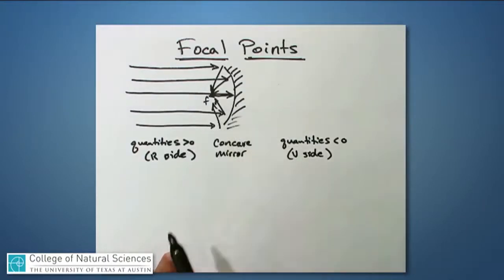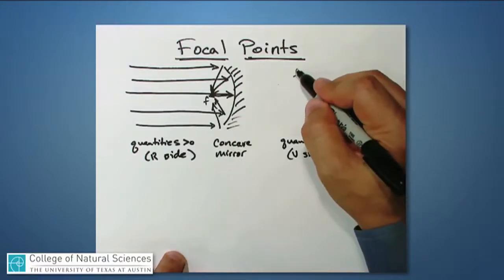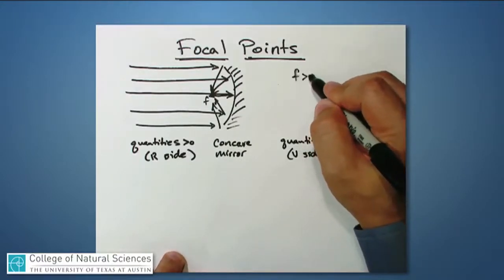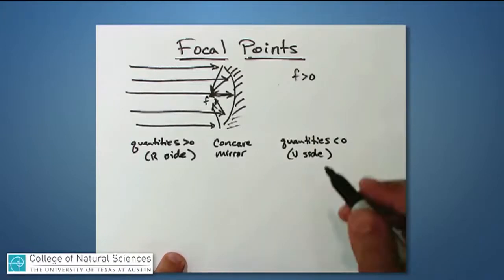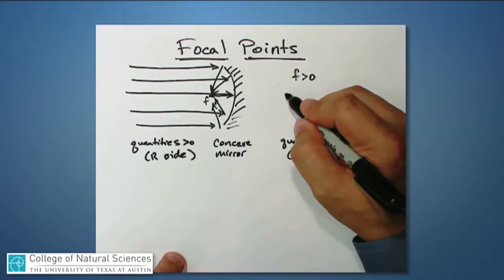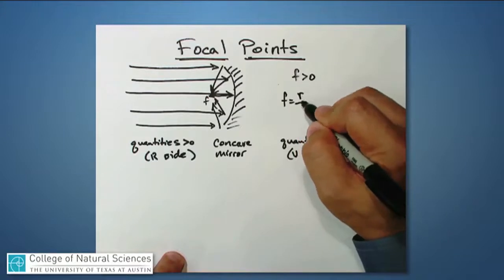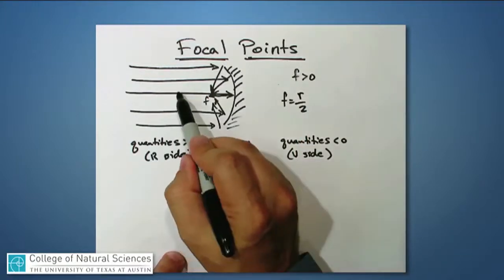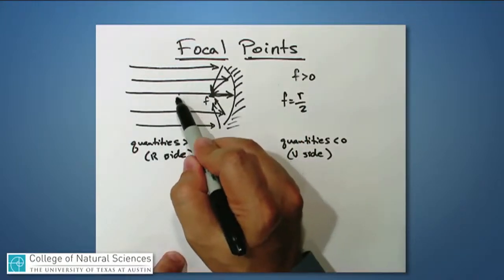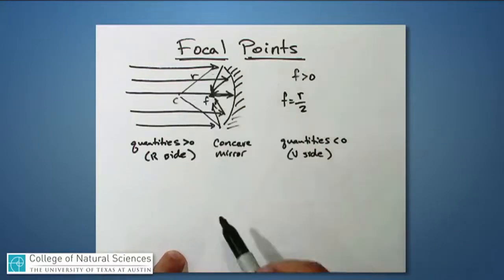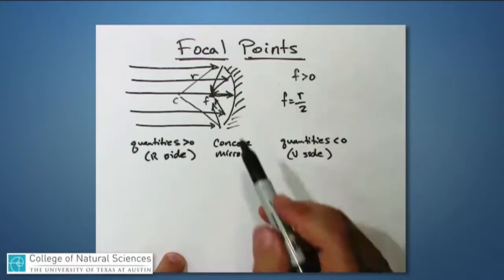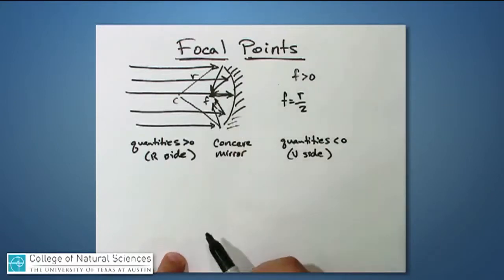This focal length will be positive. Remember that the way I calculate it is that it equals the radius of curvature divided by two. In other words, if the center of curvature is over here and that's equal to one radius of this circular mirror, the focal length is always half of the radius of curvature. As a result, R is also a positive number.